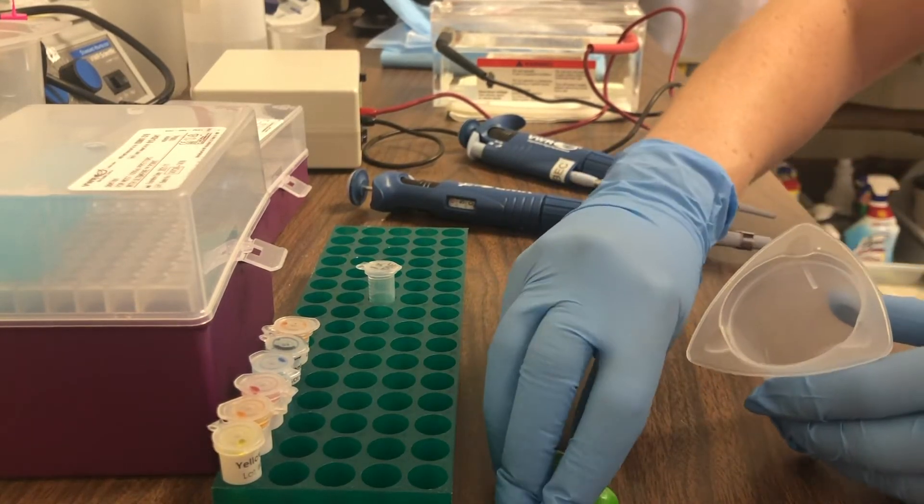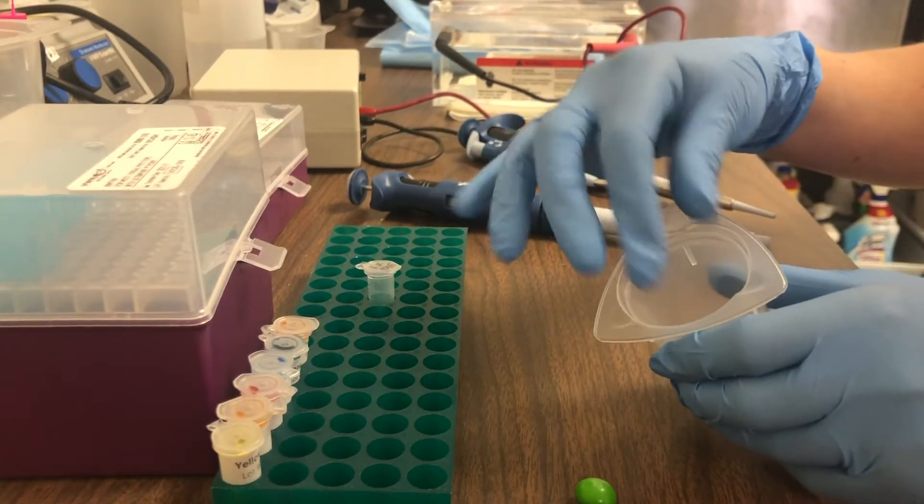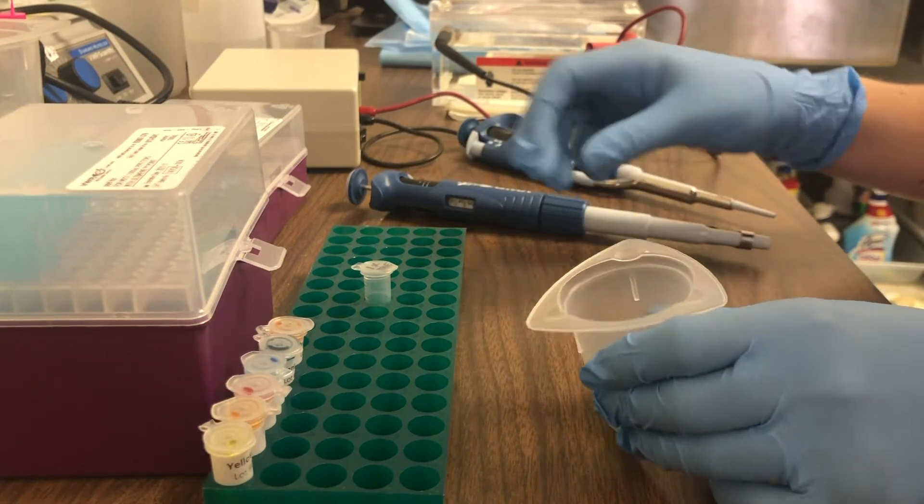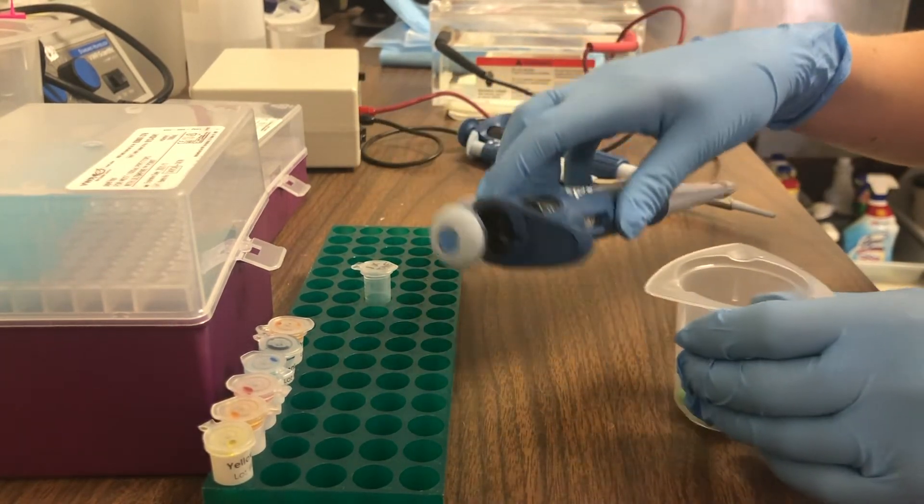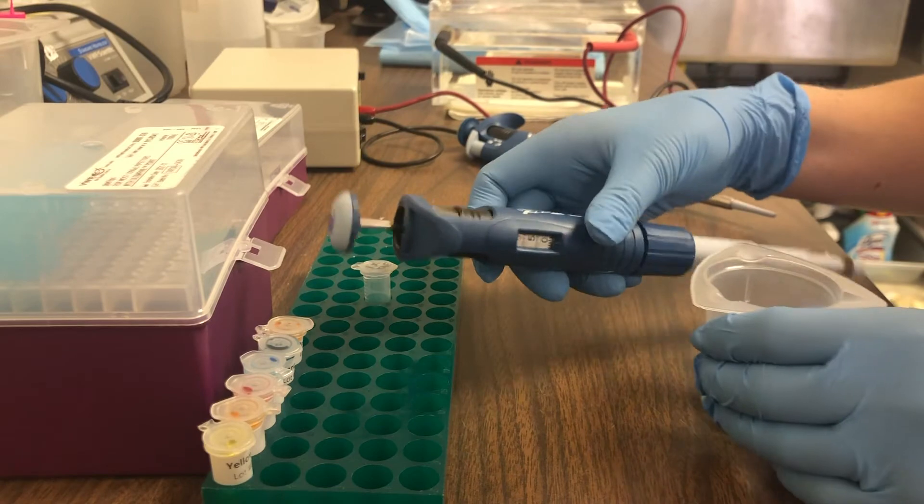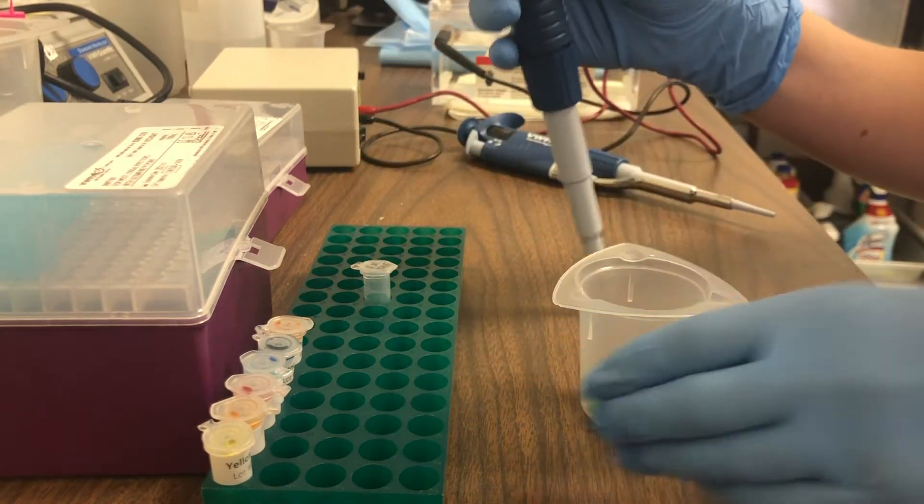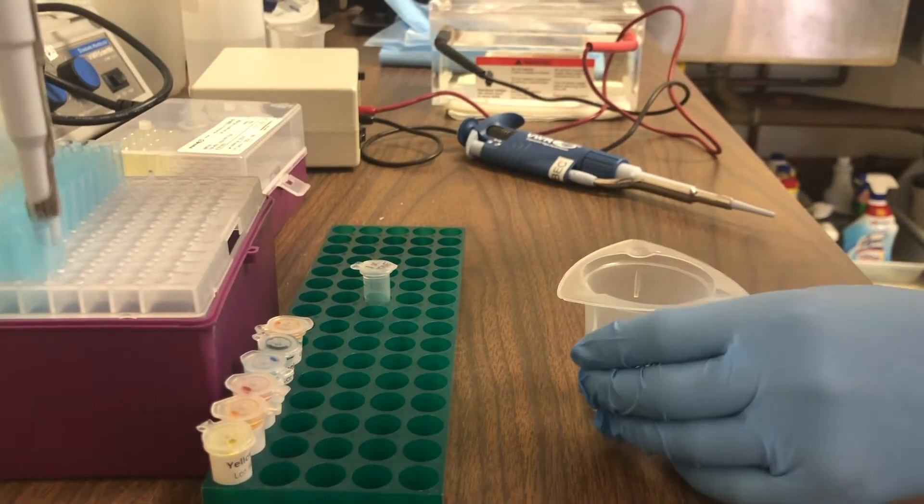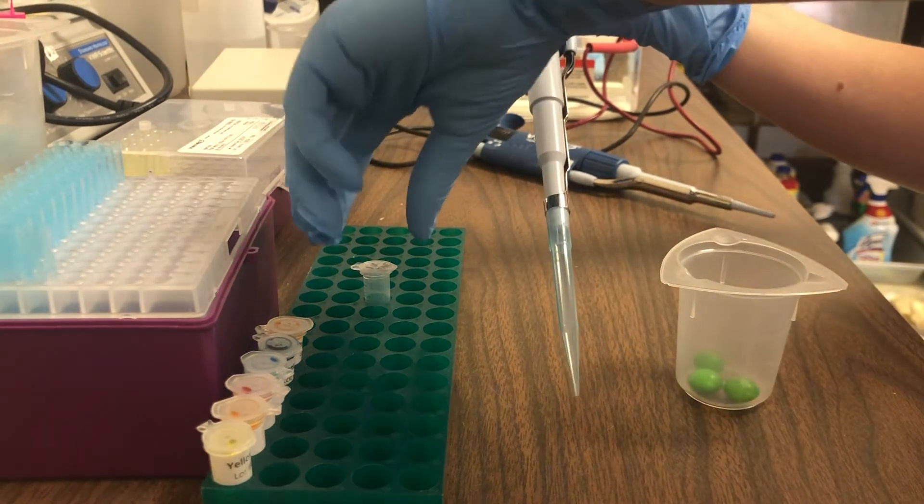Let's begin by adding our Skittles to our plastic beaker here. We'll grab our P1000 micropipette, set the volume to 500 microliters, and make sure we get a tip on our micropipette.